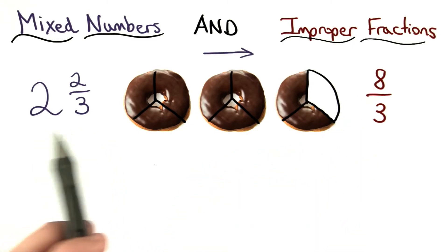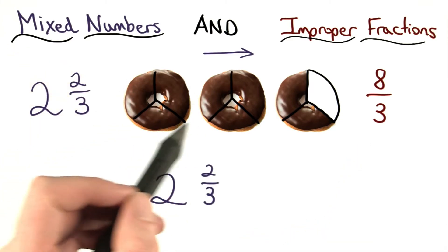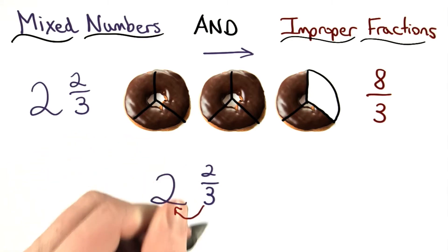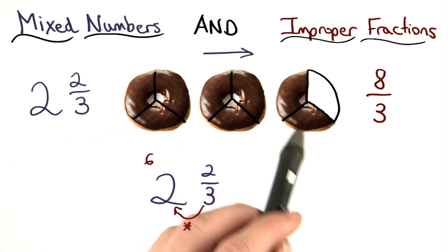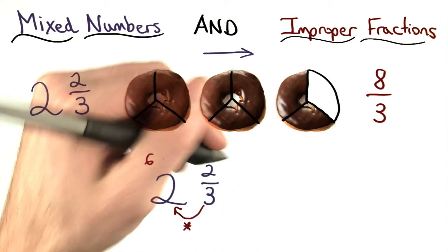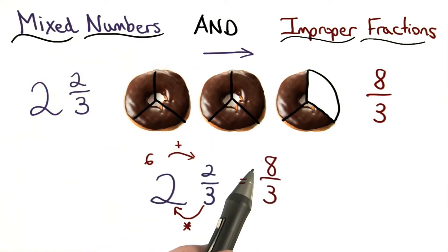So let's see how we can go from the mixed number to the improper fraction. If I take my whole donuts and split them up into thirds, I would have 6 of them, 6 thirds. I can get that by multiplying 3 times 2. I still have 2 thirds left over, so I need to add this 2 thirds to my 6 thirds. 6 plus 2 makes 8, so I get 8 thirds.